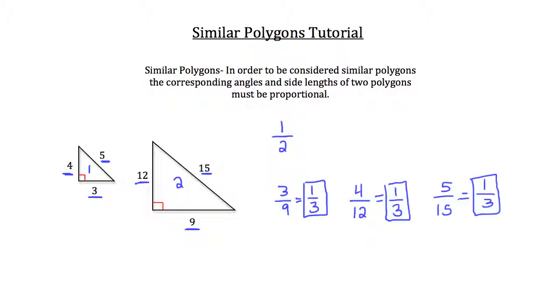and the other having lengths of 9, 12, and 15 inches, you could conclude that these two triangles were actually similar. Let's take a look at another example.